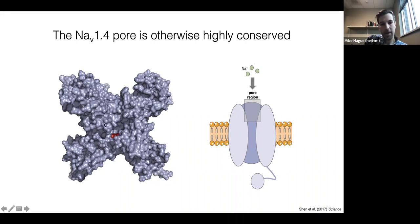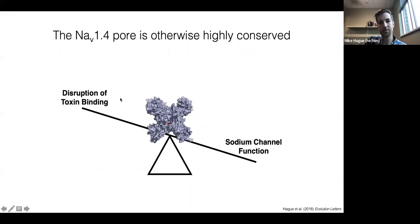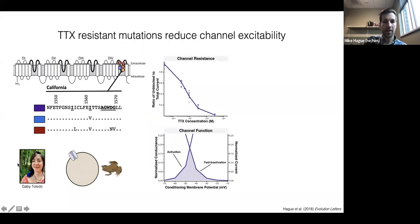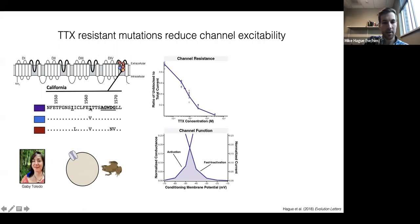It's easy to imagine how changing a few amino acids in a critical region of the channel might beneficially disrupt toxin binding, but might also have deleterious effects due to pleiotropy and epistasis within the sodium channel. We hypothesized you might get a trade-off between mutations that disrupt toxin binding at the pore but also have negative consequences for overall sodium channel function. To test this, I worked with another graduate student, Gabby Toledo, who functionally expressed different TTX-resistant alleles in Xenopus oocytes and measured resistance and baseline channel function characteristics.